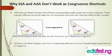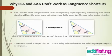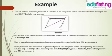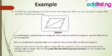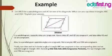Let's consider this example. Let ABCD be a parallelogram and AC be one of its diagonals. What can you say about triangle ABC and triangle CDA? You must explain your answer. So here we are given a parallelogram, and this diagonal AC splits the parallelogram into two equal halves, giving us triangle ABC and triangle CDA.